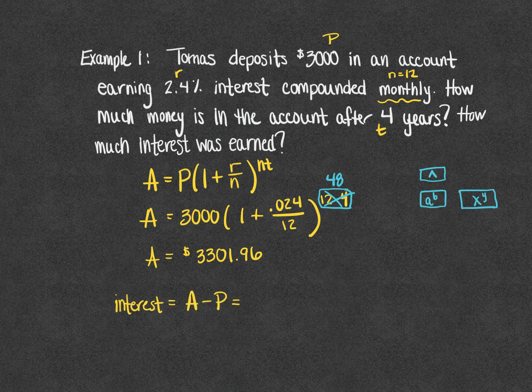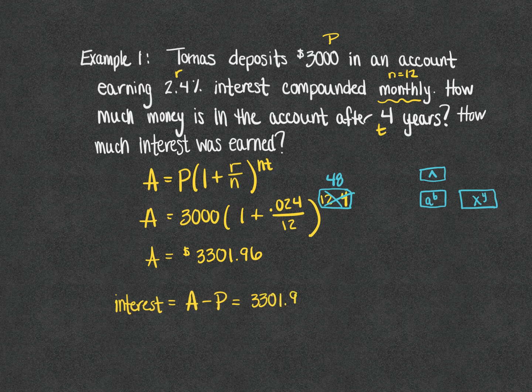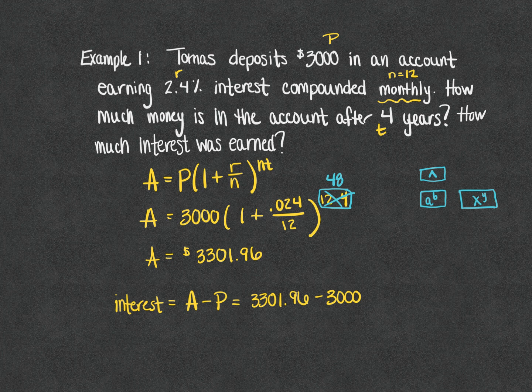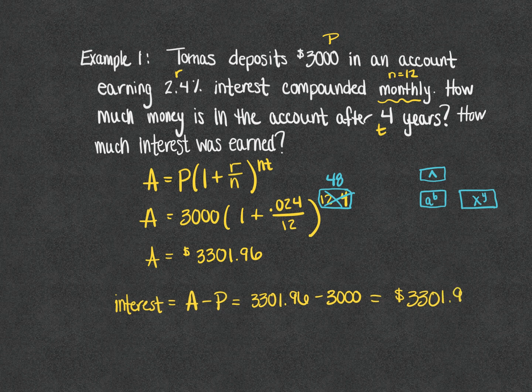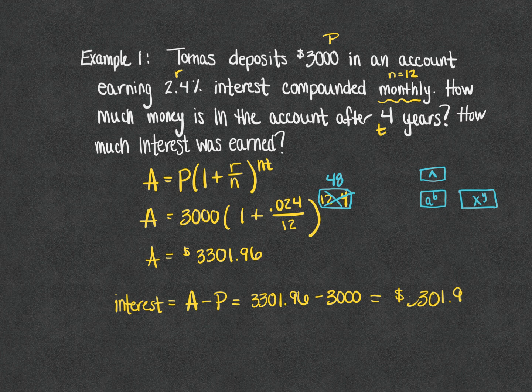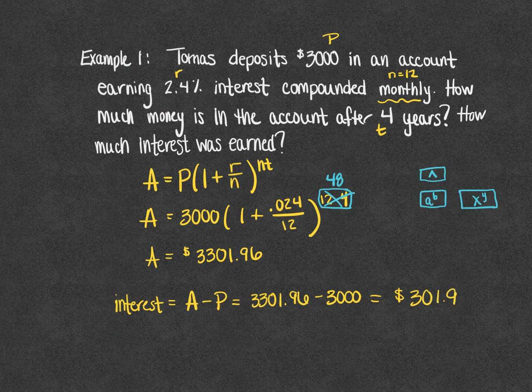If you want to calculate interest you're going to take the total and you're going to subtract the principal, or A minus P. But I would really encourage you to think of it more from a practical standpoint. I put in $3,000, four years later I had $3,301.96, so the extra $301.96 is the amount of interest that was earned.